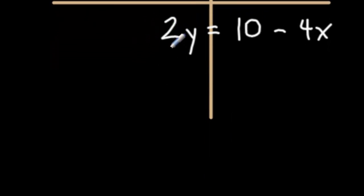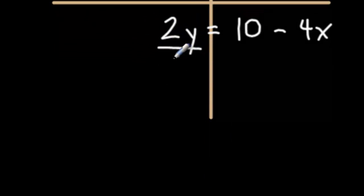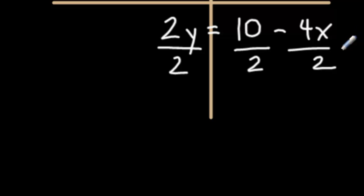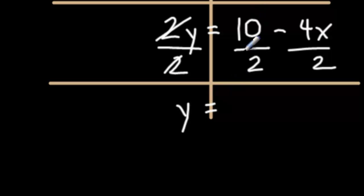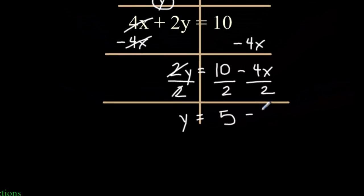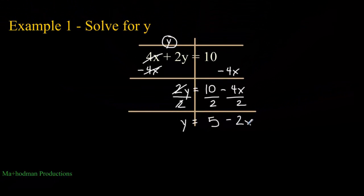Since the 2 is next to the y, that's multiplication. To undo it, divide 2 from both sides. On the right, you have to divide each term by 2 in order for that to work. The 2 cancels out, the y drops down. 10 divided by 2 is just 5. Negative 4x divided by 2 is just negative 2x. Y is all by itself, so our equation is solved.